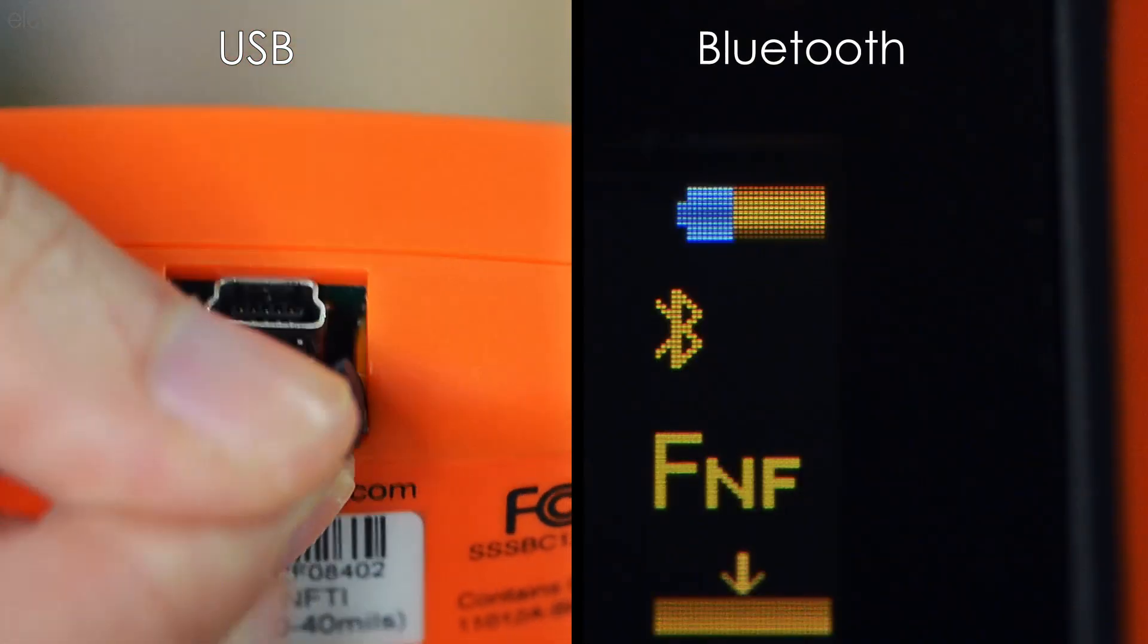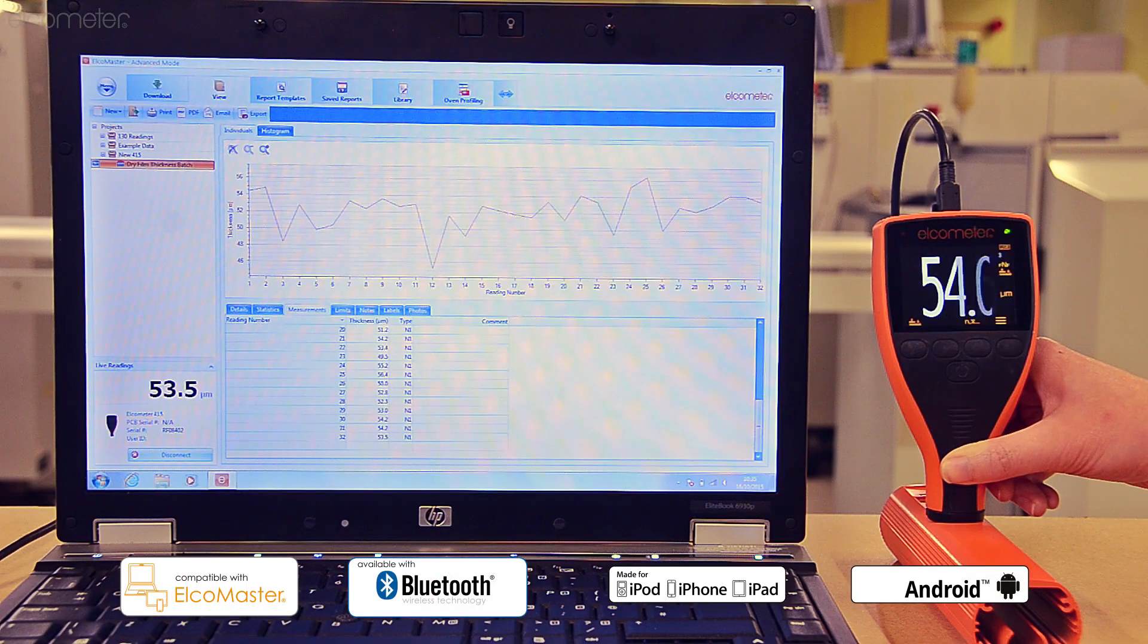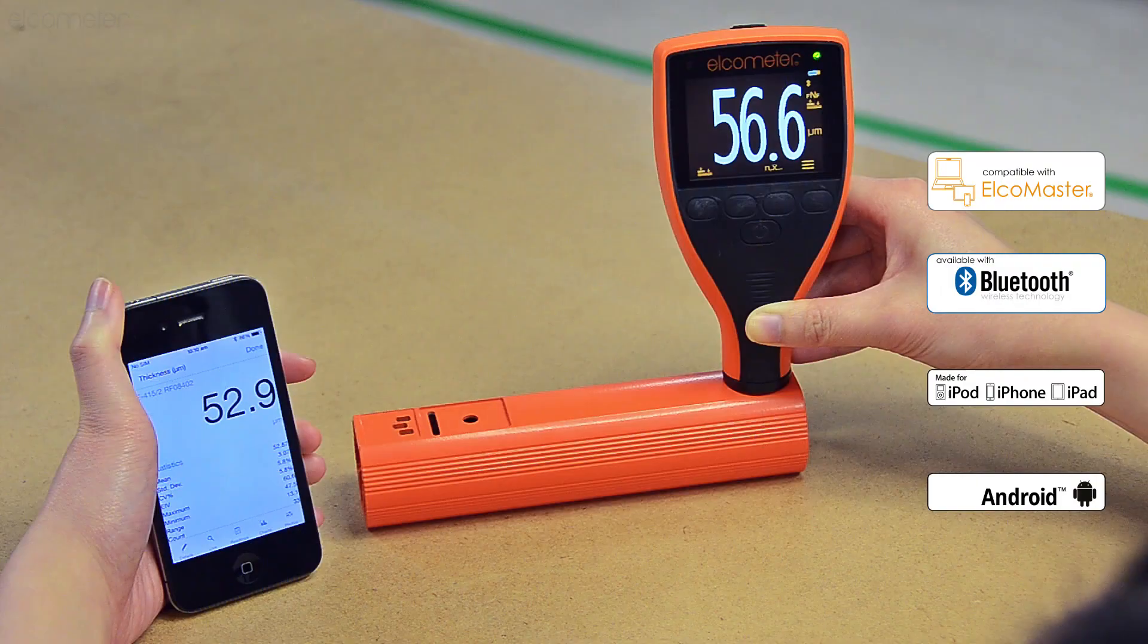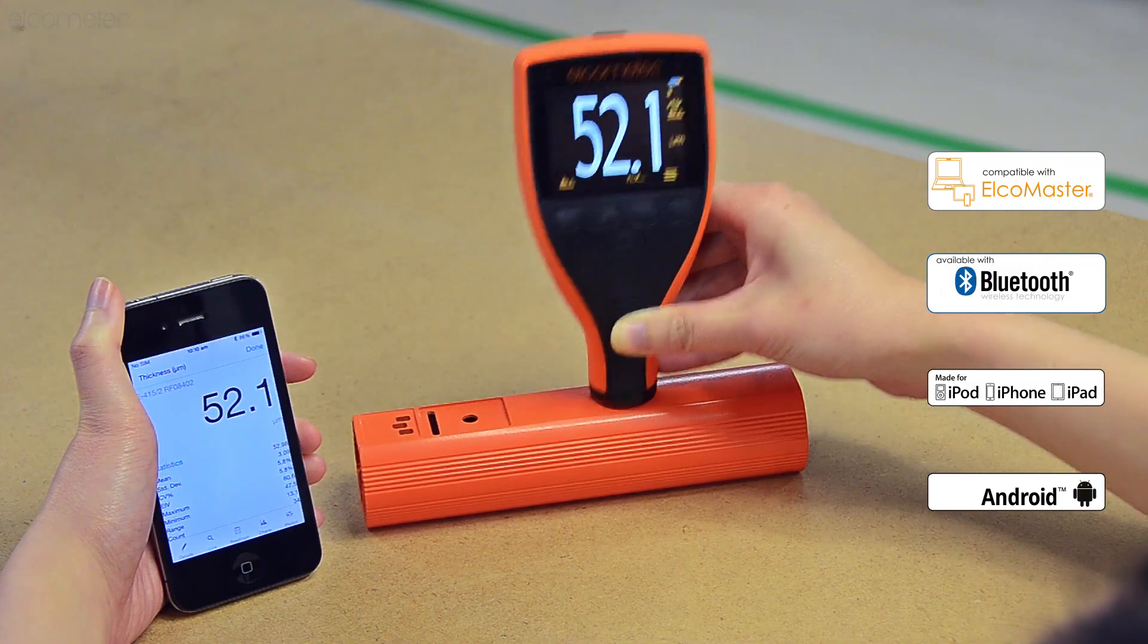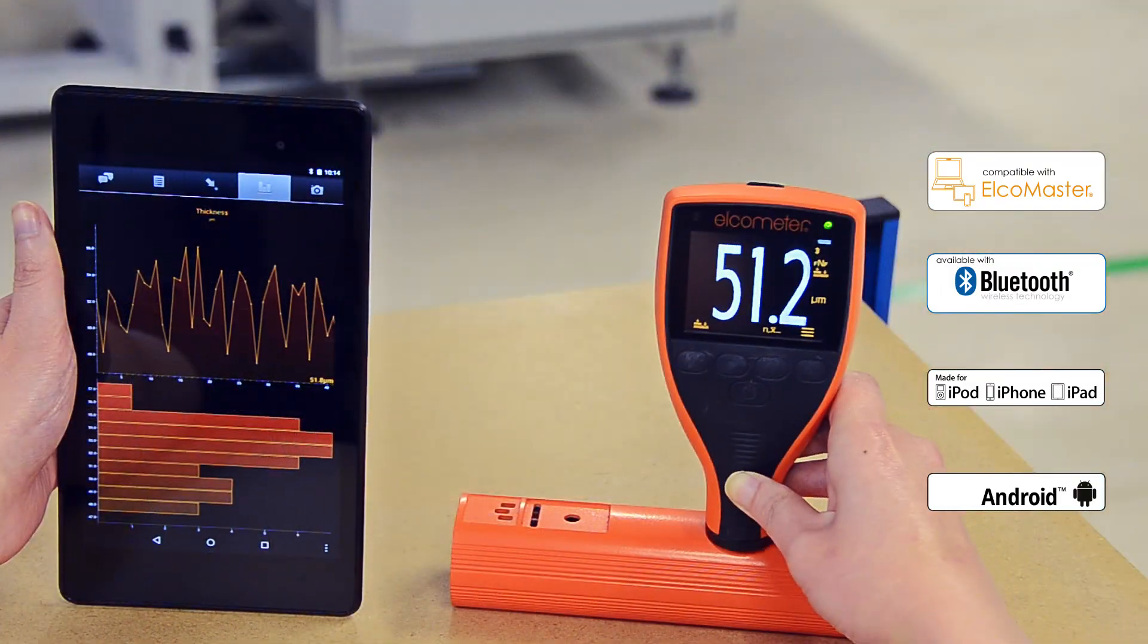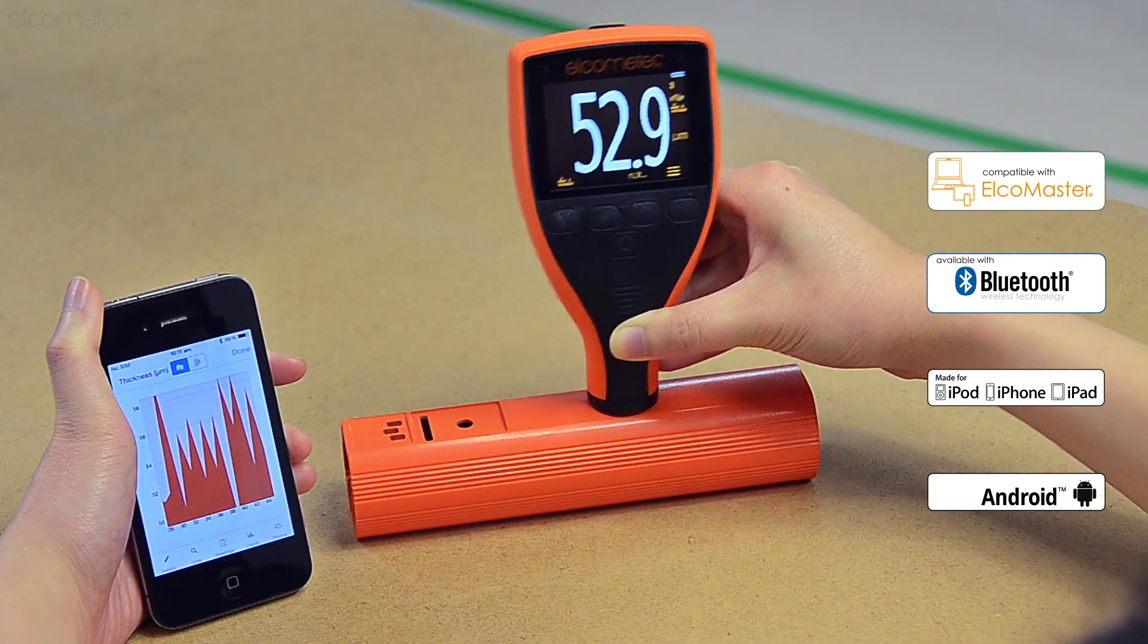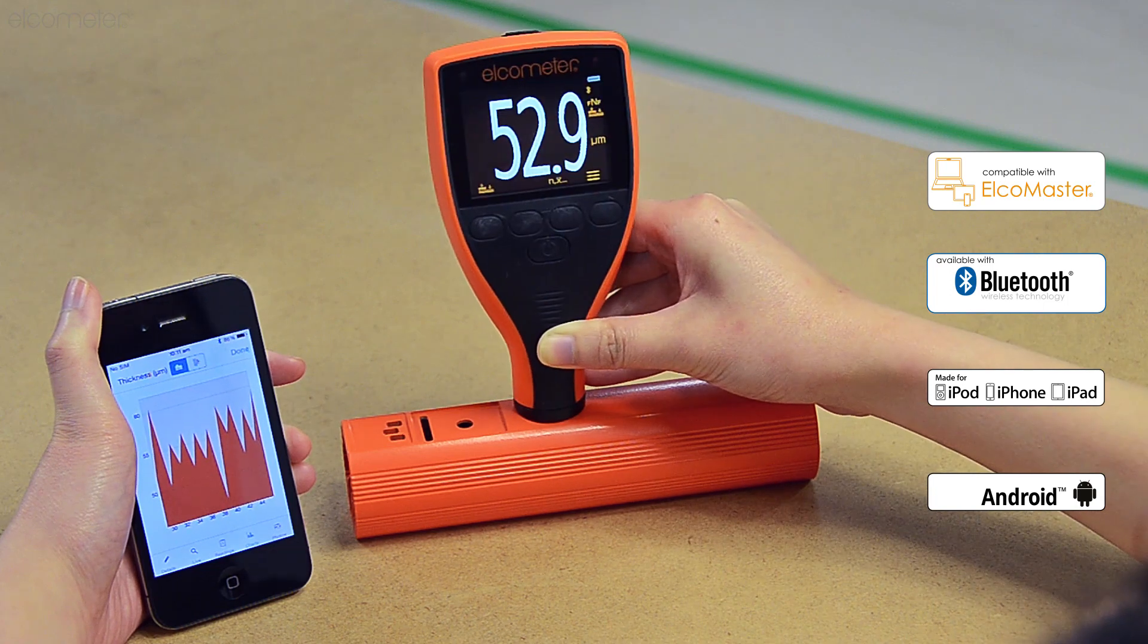The Elcometer 415 also comes with USB or Bluetooth or both. So, as each measurement is taken, the reading can be instantly transferred to your PC or Android or Apple mobile device for professional report generation either by using our Elcometer master data management software or your own inspection app.